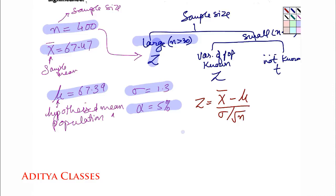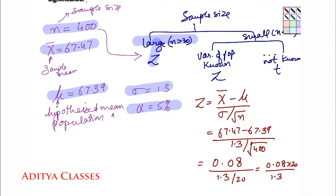In this case it becomes x bar 67.47 minus 67.39 upon standard deviation of 1.3 divided by under root of 400, giving me 0.08 divided by 1.3 upon under root of 400 would give me a 20, giving me 0.08. This 20 can go up, this becomes 1.3.